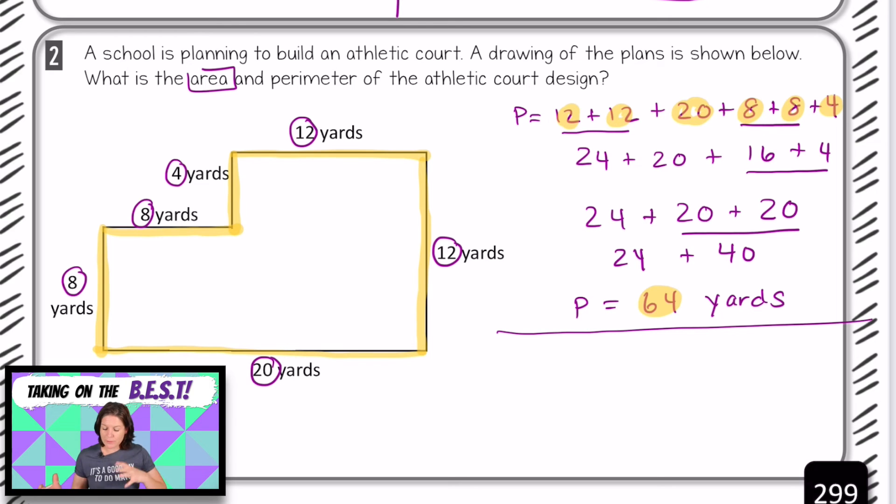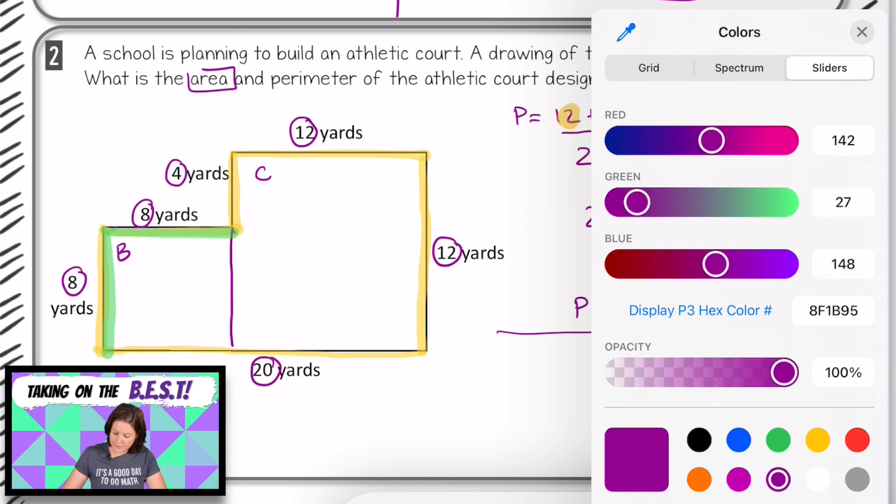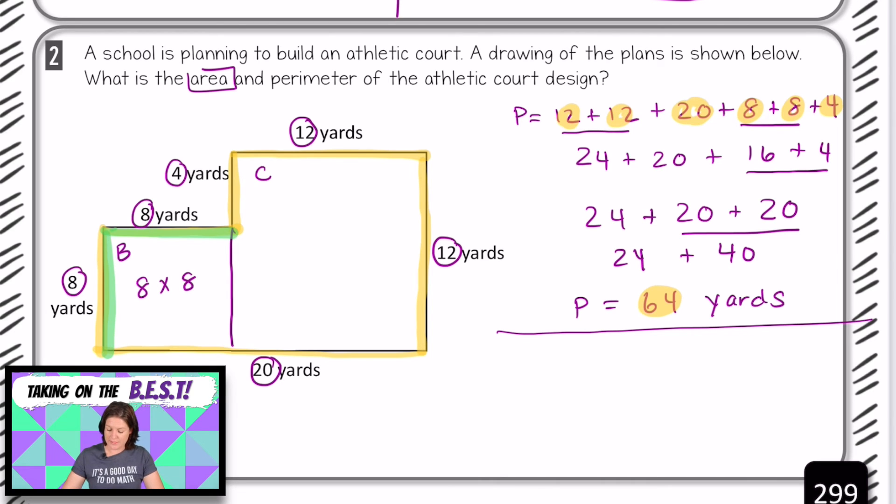And then let's figure out the area. Now that we've figured out the perimeter, we need to figure out the area. And here we have a composite figure. We need to decompose or break down that figure into multiple rectangles. And I'm seeing right here, I could break this rectangle into rectangle B and rectangle C again. For rectangle B, we have a length of 8 yards and a width of 8 yards. So we can apply that formula of 8 times 8. And then over here, we have a length of 12 yards and a width of 12 yards. So we can multiply 12 times 12 to figure out the area.